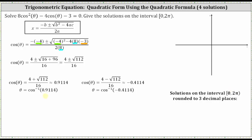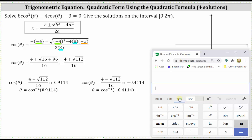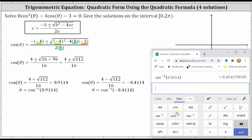Because we don't have nice cosine function values, this is going to require a calculator. Going to the calculator, we first want to make sure the calculator is in radian mode. From here, we click functions, click on inverse cosine, and enter 0.9114, then enter. To three decimal places, we have 0.424 radians.